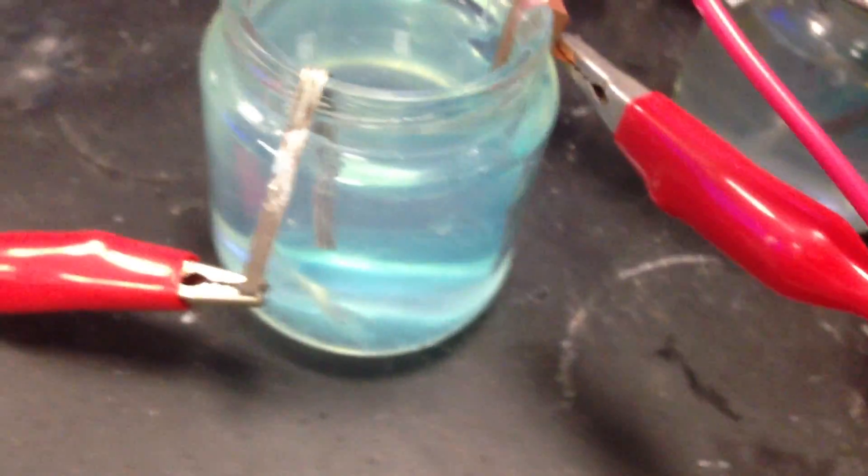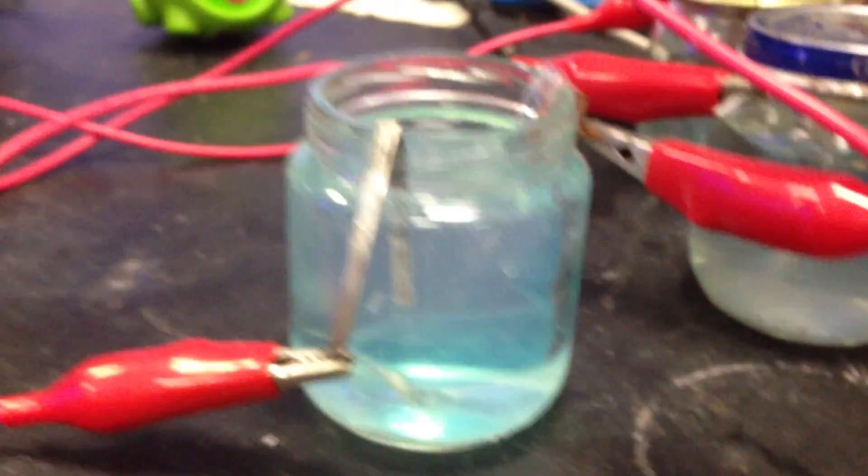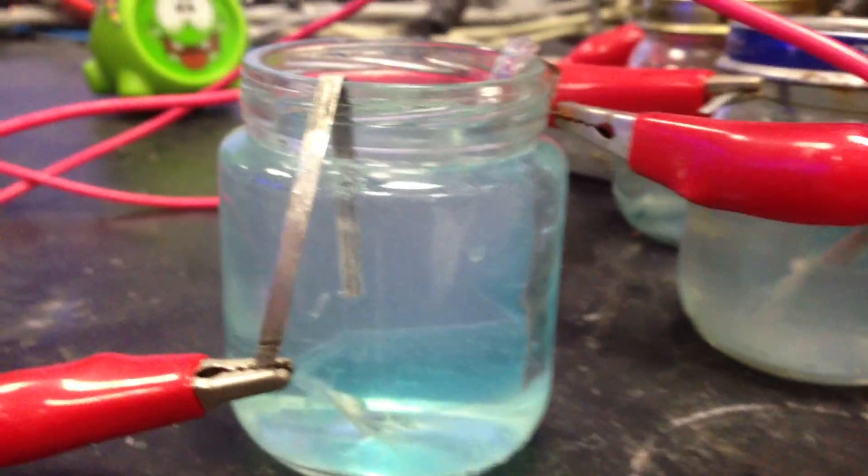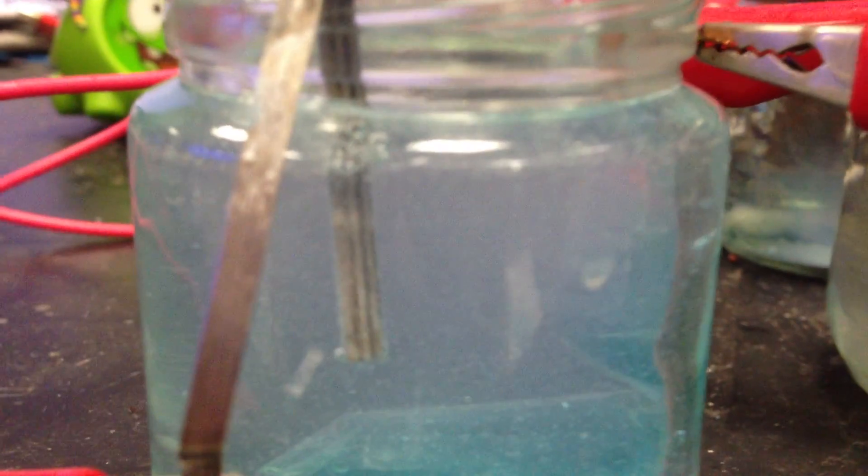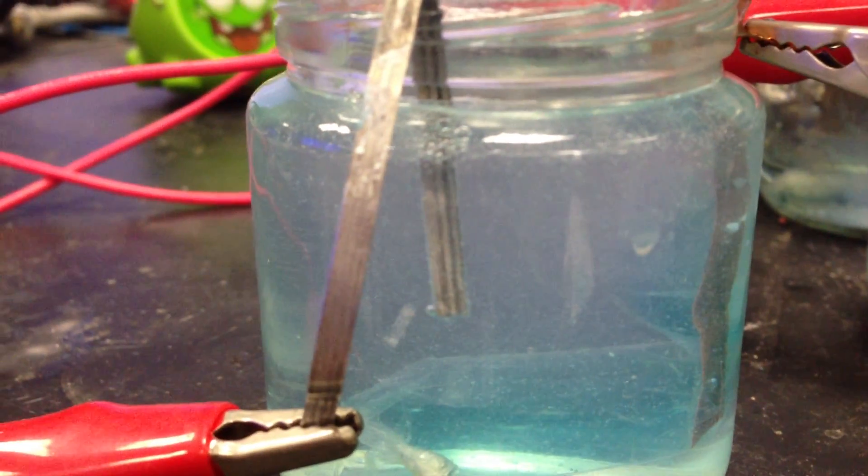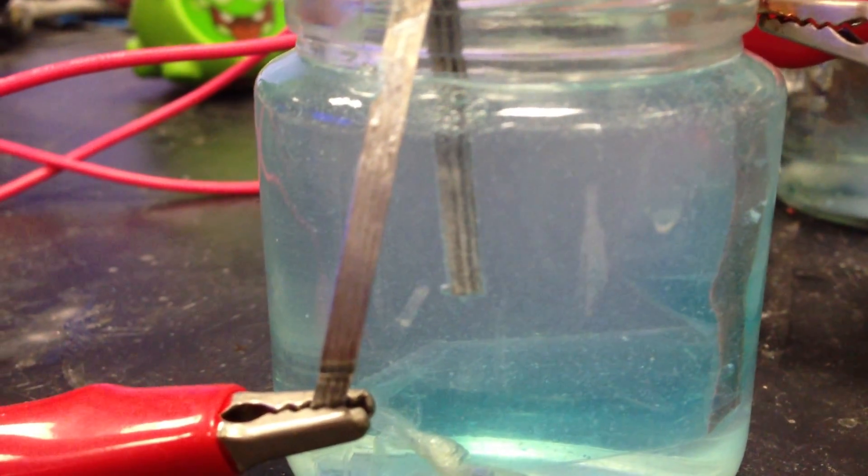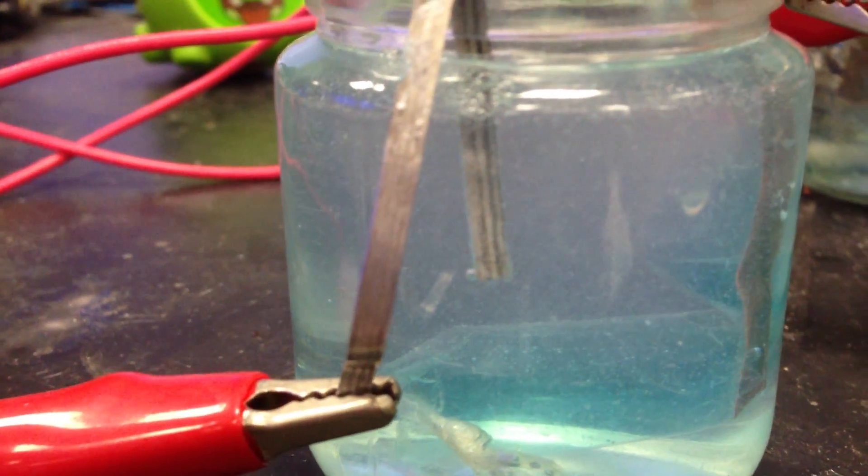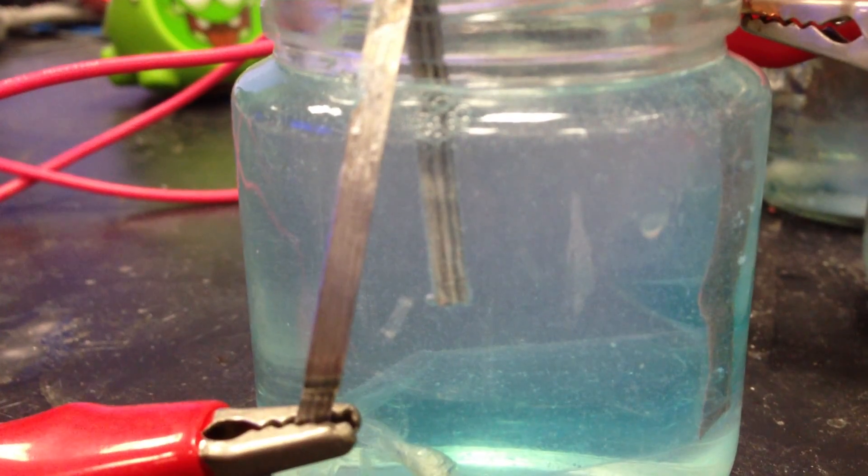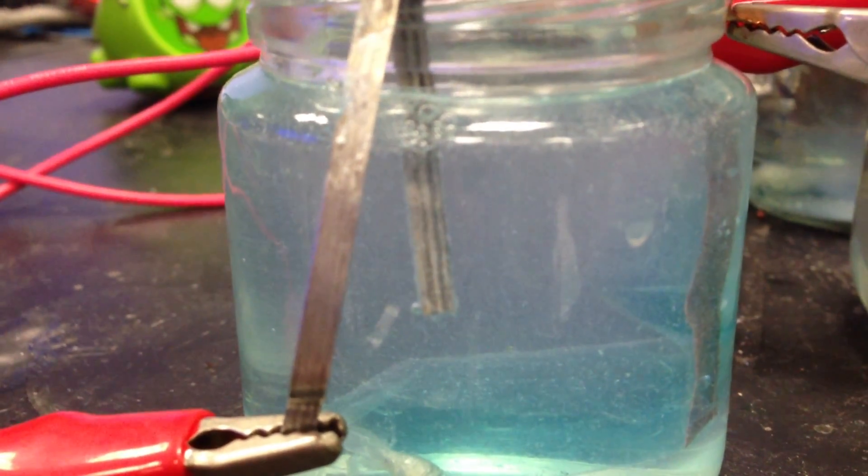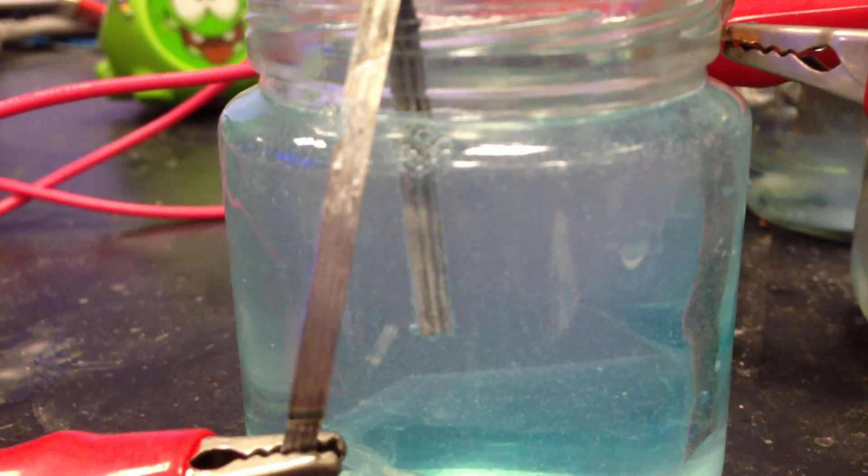Hopefully you can see some fizzing going on. This is great! Look at that fizzing! We should know what bubbles are being made right there, and that's one of the reasons why this battery is not giving off the voltage that we get from the net potential.